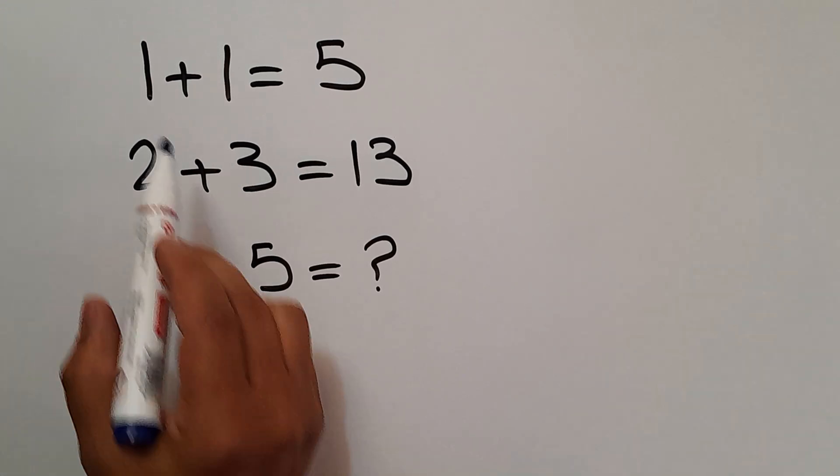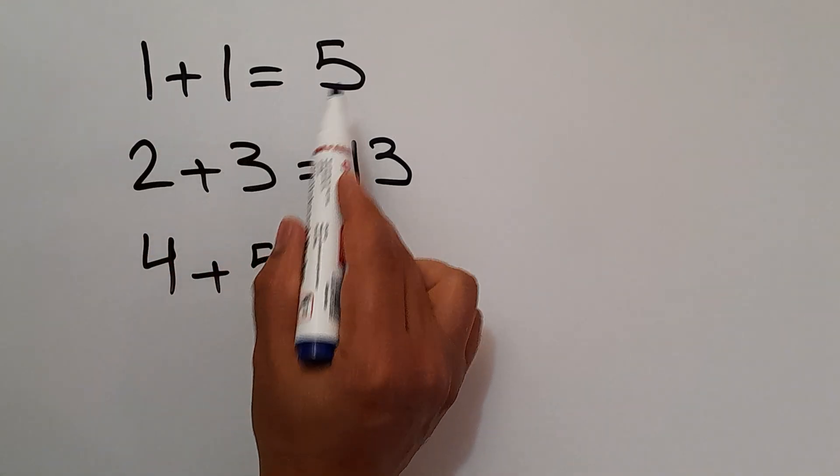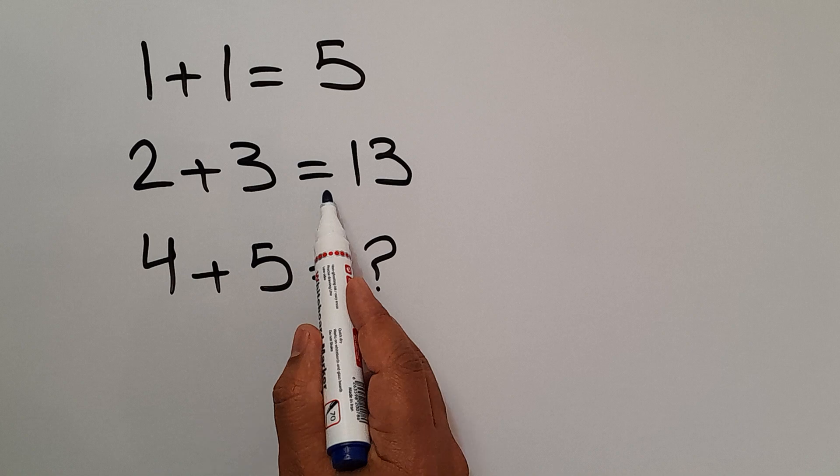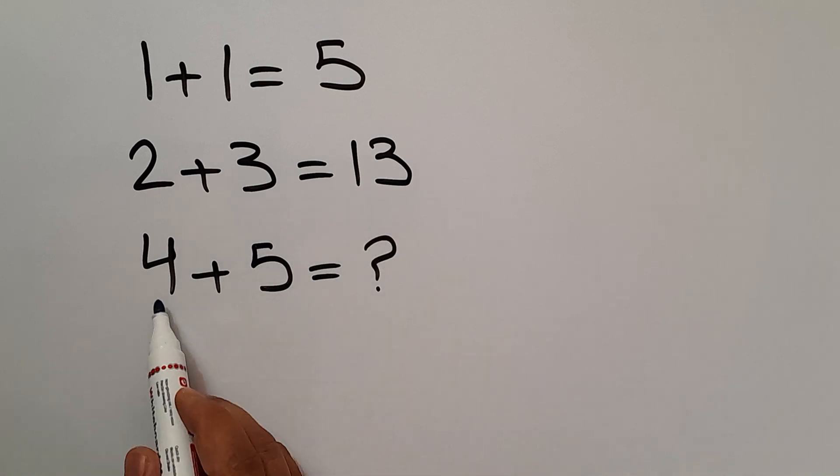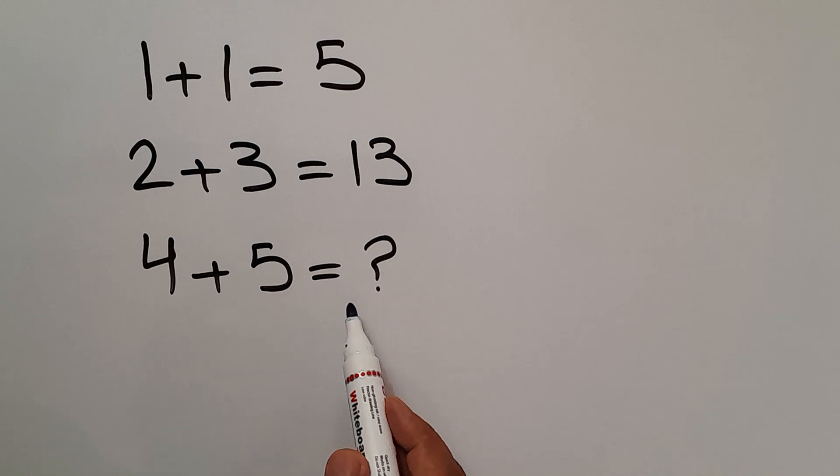Hey guys, welcome to Puzzle Joy. 1 plus 1 equals 5, 2 plus 3 equals 13, and 4 plus 5 equals question mark. Our goal is to find the pattern that exists here and calculate the missing number.